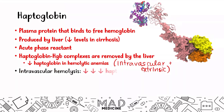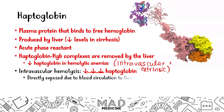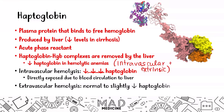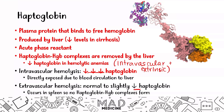In intravascular hemolysis, you're going to have a significant decrease in haptoglobin, directly because hemoglobin is exposed to haptoglobin in the bloodstream and the complexes circulate to the liver. In extravascular hemolysis, you're going to have normal to slightly decreased haptoglobin — that is not a main finding. The decrease in haptoglobin is the hallmark of intravascular hemolysis. The reason you don't see it in extravascular hemolysis is because the lysis occurs in the spleen, so haptoglobin-hemoglobin complexes don't form.